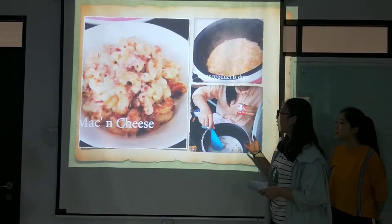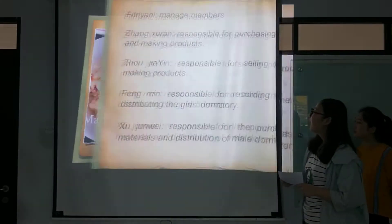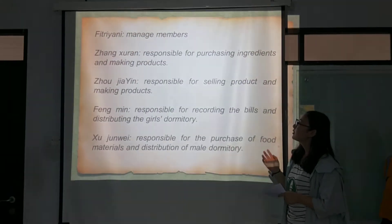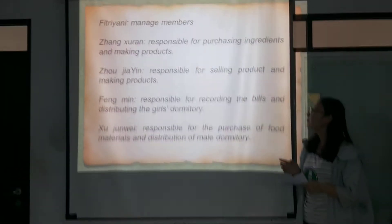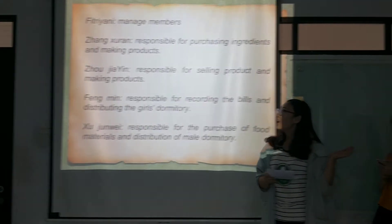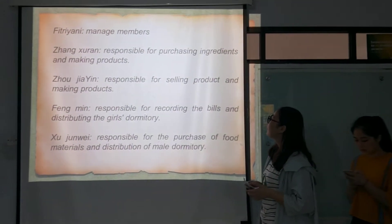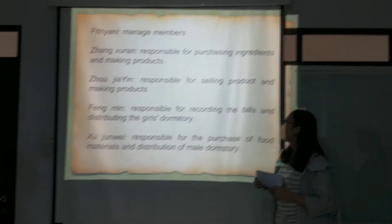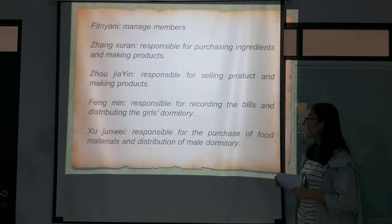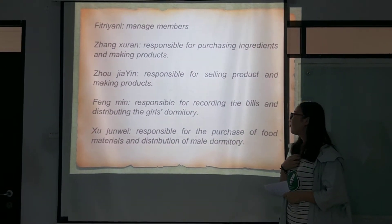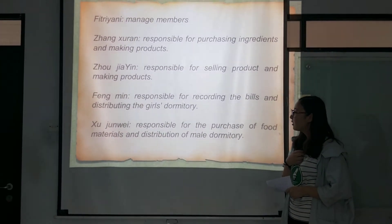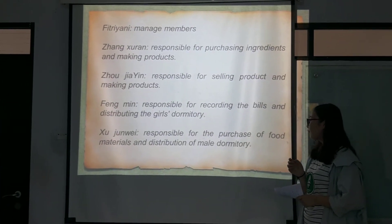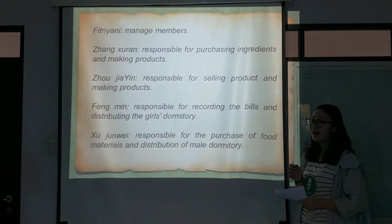These are our products. For our group, everyone has their responsibility. Portray is the manager. Zhang Shiyuan is responsible for purchasing ingredients and making products. Zhou Jiayin is responsible for selling products and making products. I am responsible for purchasing goods and distributing to the girls' dormitory. Xu Junwei is responsible for purchasing materials and distribution to the men's dormitory.